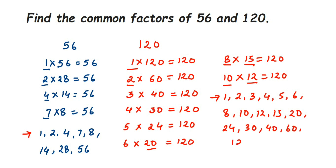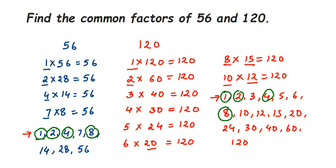Now we find the numbers present in both lists. 1 is a common factor. 2 is a common factor. 4 is a common factor — it's present in both. 8 is a common factor. After 8, there are no other numbers common to both lists. So the common factors of 56 and 120 are 1, 2, 4, and 8. I hope it's clear. If you have further questions, drop a comment — I'll try to make a video on it. Thank you for watching!